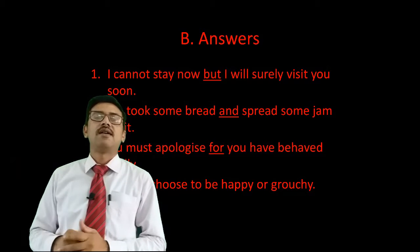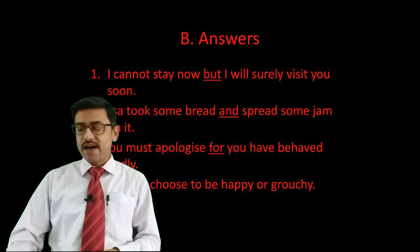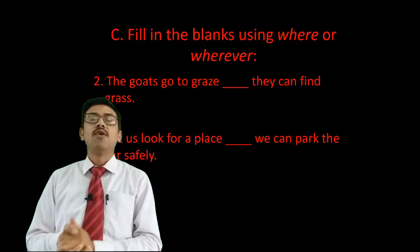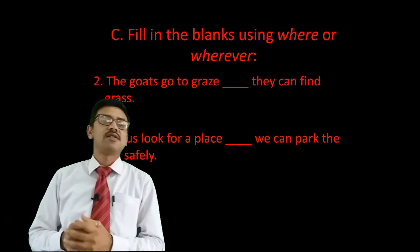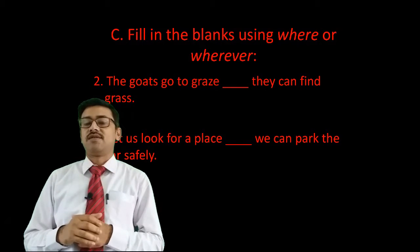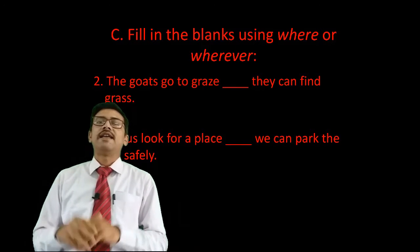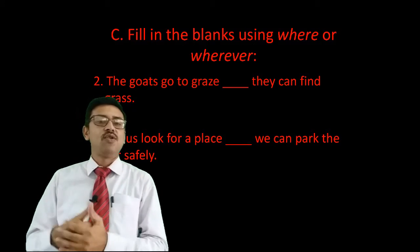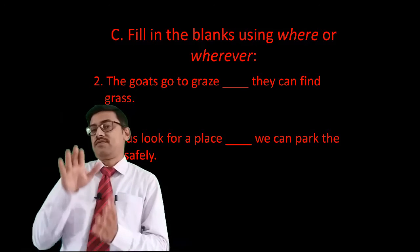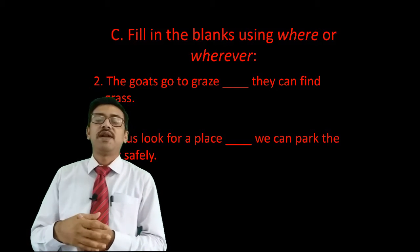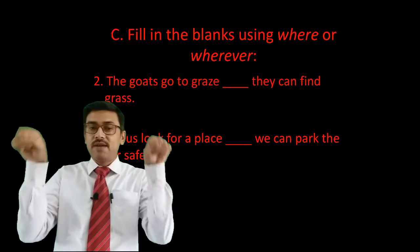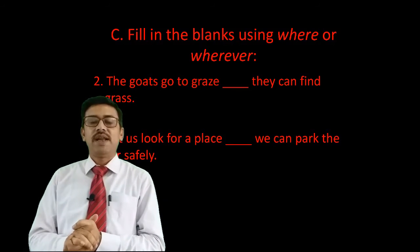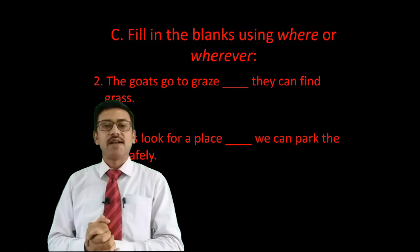Next, exercise C: fill in the blanks using 'where' or 'wherever.' These two conjunctions fall under the category of subordinating conjunctions. The most important thing about subordinating conjunctions is that if you drop them, the sentences separately do not make complete sense. As I noted on the board in the video, 'where' and 'wherever' indicate place. I have picked sentences number two and five from this exercise.